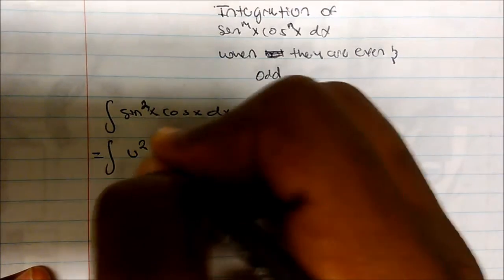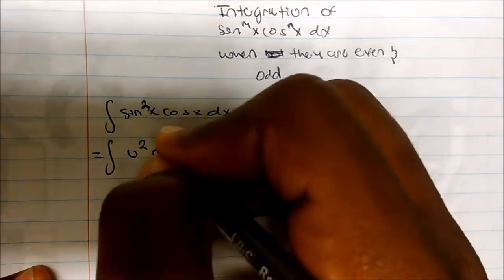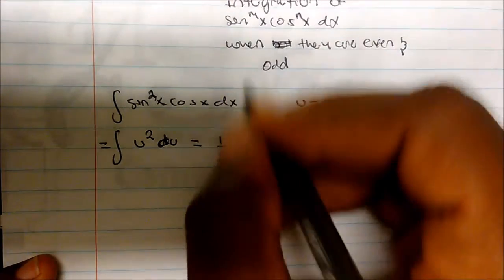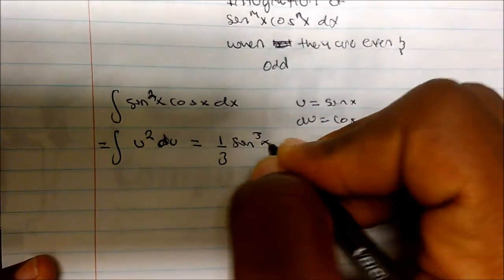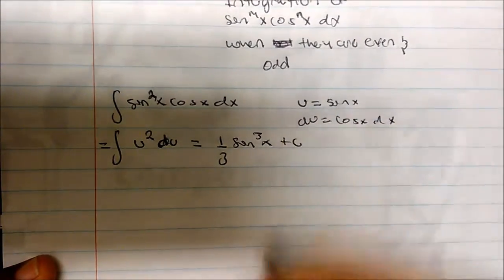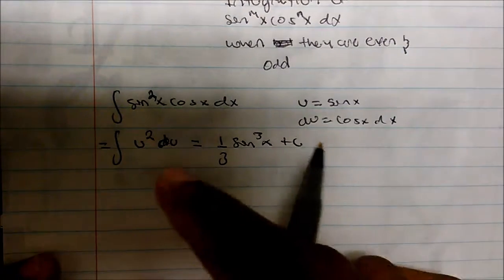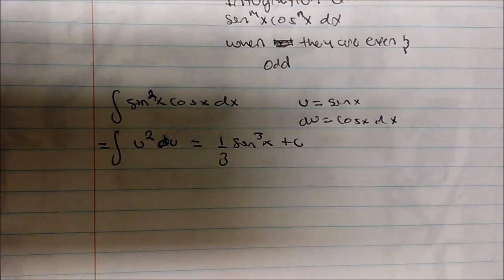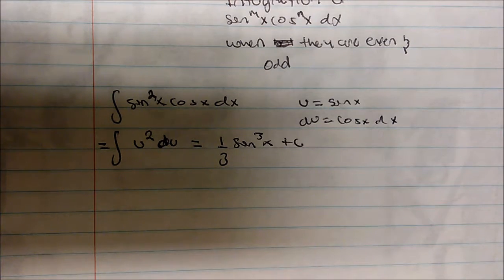And so this becomes the integral of u squared du, which is simply equal to one-third sine cubed of x plus C. So this one is pretty trivial, pretty easy.